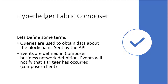Let's define some terms. A query is exactly what it sounds like — you're going to query the blockchain, and this is sent via the API. An event is pretty much what you'd expect. In Composer, it's defined in the business network definition. Events will notify that a trigger has occurred, and it's going to use the Composer-client API.